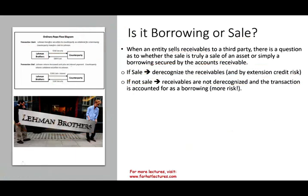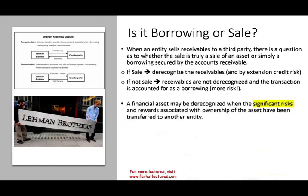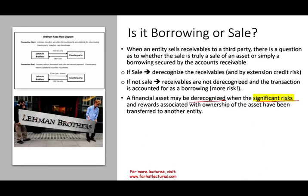Why were they doing so? Because they had so much bad receivables — the impairment losses were so large that if they really wanted to recognize them, it would be devastating. So they said: we don't have those receivables, so you don't have to worry about the credit risk. They were trying not to book those impairment losses because they were bad debt investments they were not able to collect on. A financial asset may be de-recognized when significant risk and reward associated with the ownership has been transferred to another entity. Lehman did not truly transfer the risk and reward.